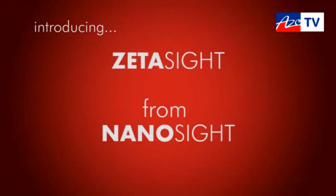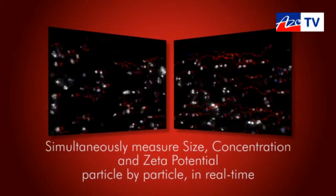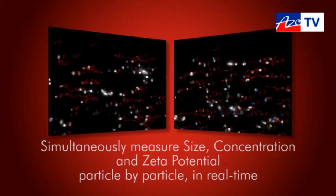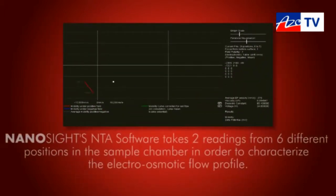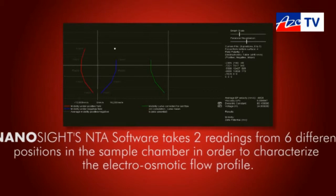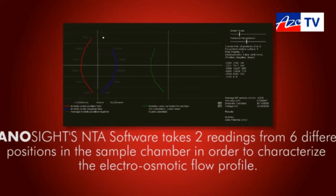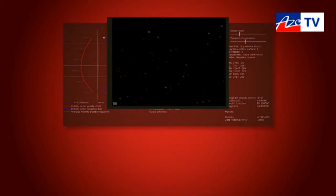I'll just run this now so that you can see the movement of those particles. This is ZetaSight and what you're seeing here is the electrophoretic movement of the particles. They're being tracked, but there are three forms of movement. We need to model the electroosmosis of the liquid so we can subtract that, model it out from the Brownian motion and the electrophoretic motion of the particles themselves.